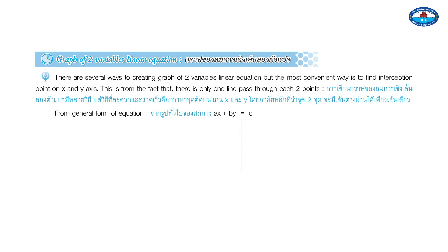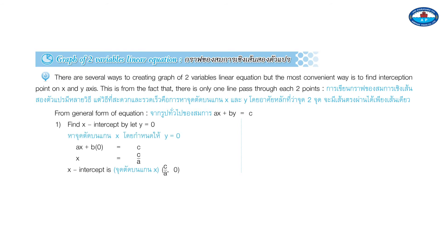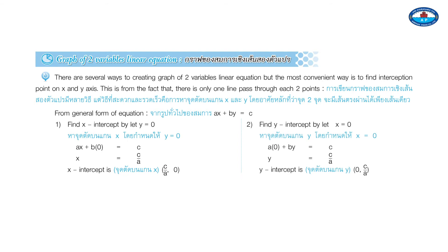The graph of a two-variable linear equation can be constructed in several ways. The most convenient way is to find the interception points on the x and y axes, since only one line passes through any two given points. From the general form Ax plus By equals C: Step 1 — find the x-intercept by letting y equal 0, giving x equals C over A, so the x-intercept is (C/A, 0). Step 2 — find the y-intercept by letting x equal 0, giving y equals C over B, so the y-intercept is (0, C/B).